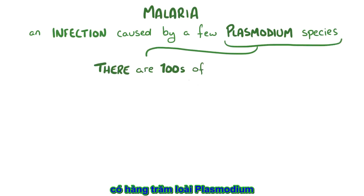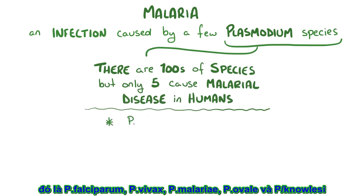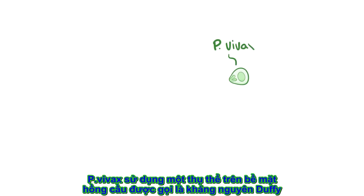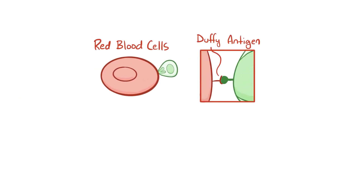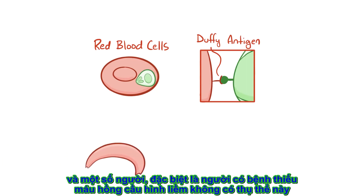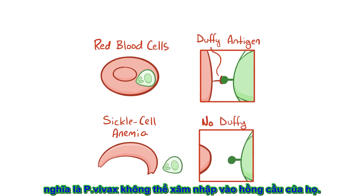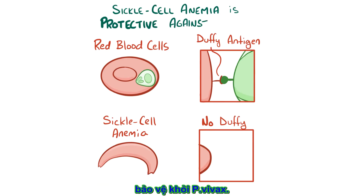There are hundreds of types of plasmodium species, but only 5 cause malarial disease in humans: Plasmodium falciparum, Plasmodium vivax, Plasmodium malariae, Plasmodium ovale, and Plasmodium knowlesi. Plasmodium vivax uses a specific erythrocyte surface receptor called the Duffy antigen, and some individuals, particularly those with sickle cell anemia, lack this receptor, meaning that Plasmodium vivax can't get into their cells. In other words, having sickle cell anemia is genetically related to having relative protection from Plasmodium vivax.